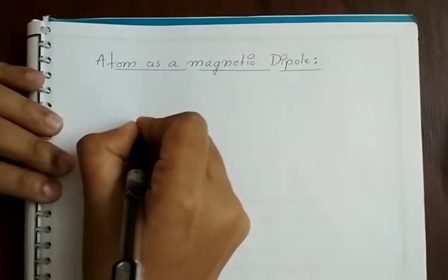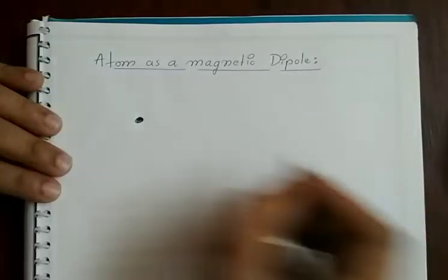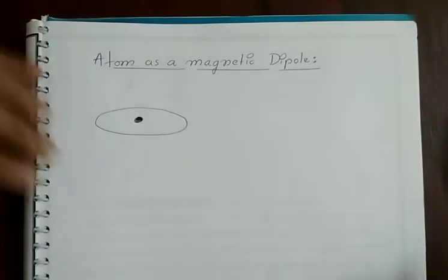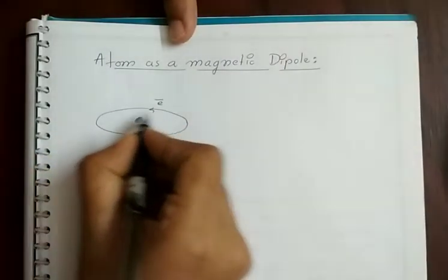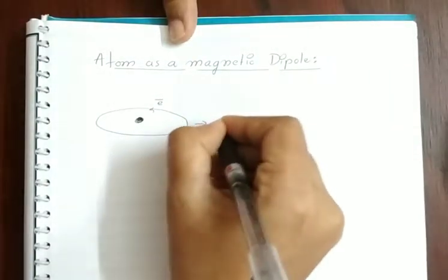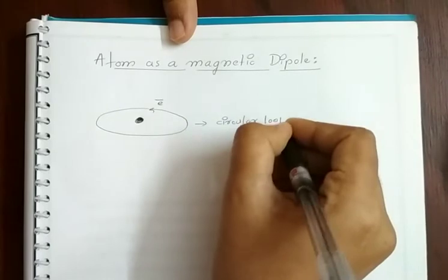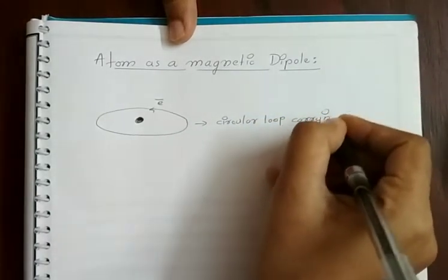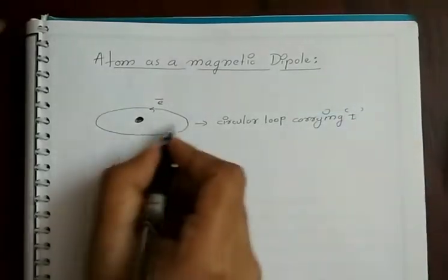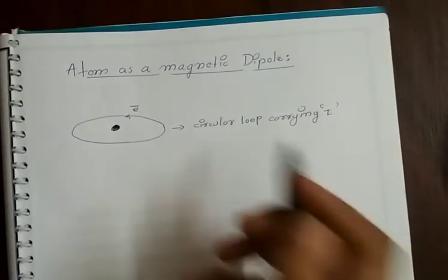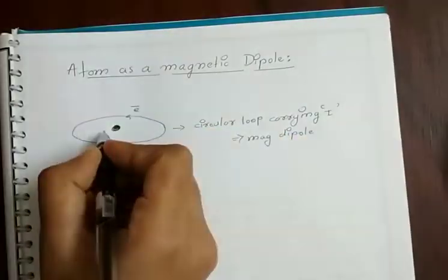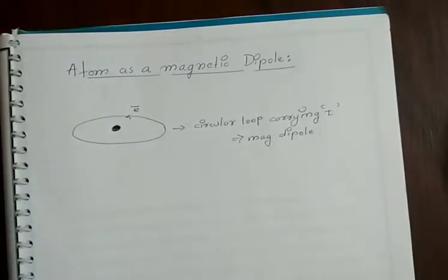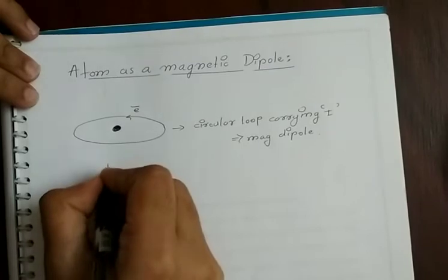We know the basic structure of an atom — it consists of a central nucleus around which electrons are revolving. Since the electrons are revolving around the nucleus, a charged particle moving in a closed loop is analogous to a circular closed loop carrying current. We have already studied that a current-carrying circular loop behaves as a magnetic dipole. So whenever you consider an atom with electrons revolving around the nucleus, it behaves as a magnetic dipole with a magnetic dipole moment M.